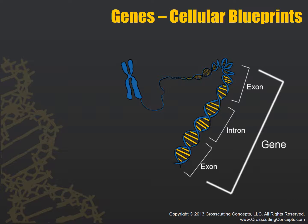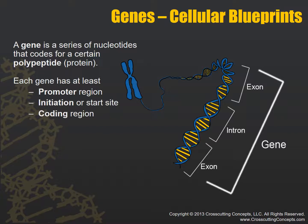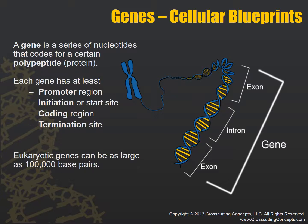Let's talk about what genes are. A gene is a series of nucleotides that codes for a polypeptide — also called a protein. Each gene has at least a promoter region, an initiation or start site, a coding region, and a termination site.